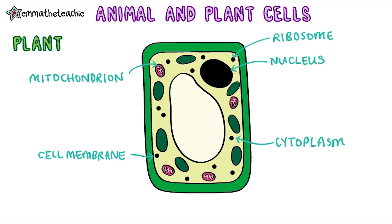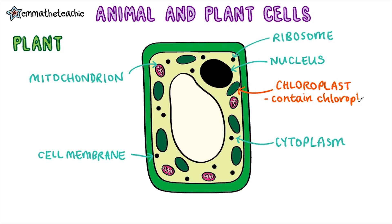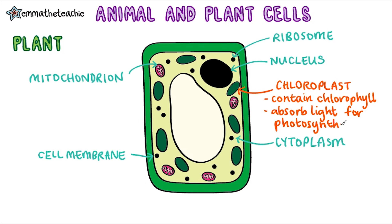Now let's swap colors and do the parts that are specific to plant cells. Starting with this green blob — this is a chloroplast. Not every plant cell has these, but when they do, their function is to contain chlorophyll, which is that green pigment that makes it look that way. Chlorophyll is really important because it absorbs light for photosynthesis. You're going to do a lot more on photosynthesis later on in Paper 1.